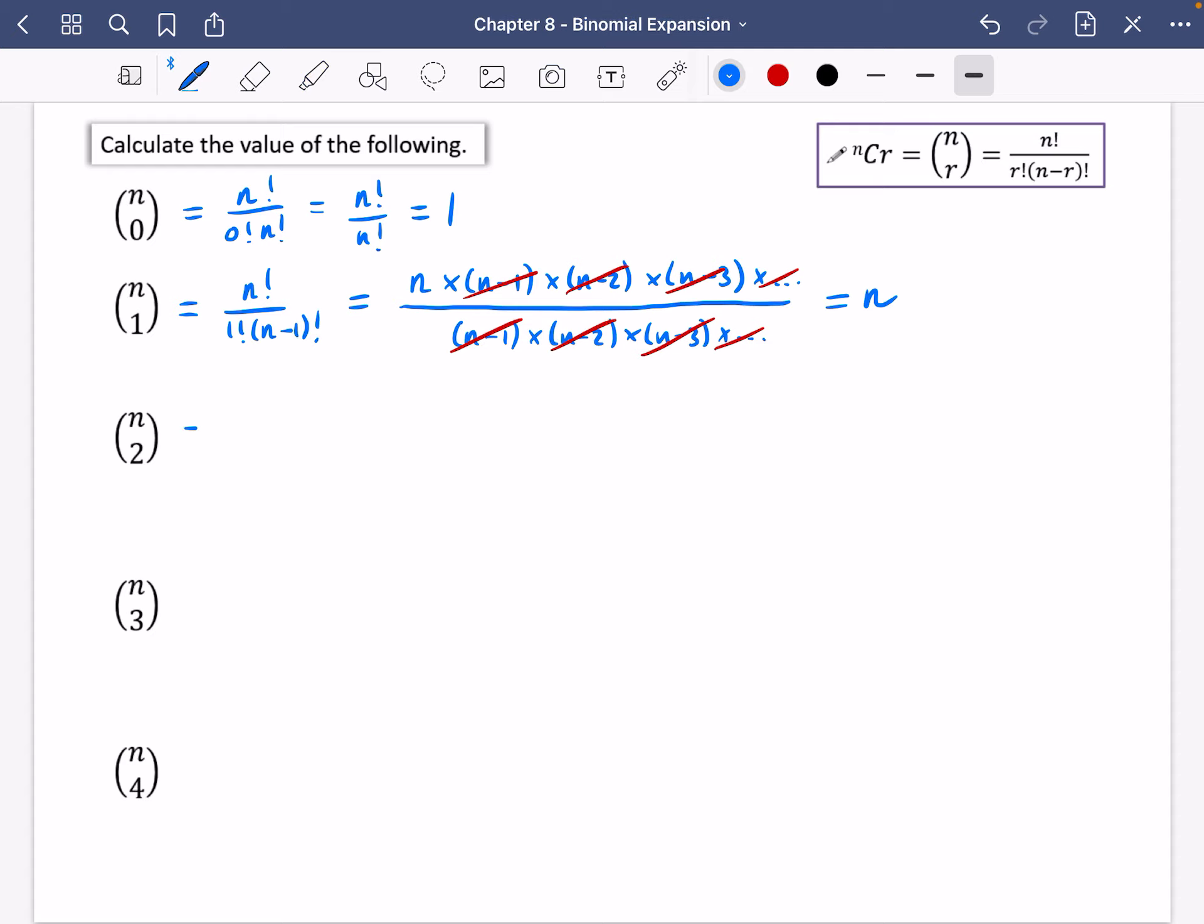We're now going to do n choose 2. So let's write the formula down. We're going to have n factorial over 2 factorial, n minus 2 factorial. n factorial is n times n minus 1 times n minus 2 times n minus 3, etc. Again, I should go all the way down to 1, but I'm being lazy. 2 factorial is just going to be 2. And then I'm going to have n minus 2 and keep decreasing that n minus 2, n minus 3. It would keep going though.